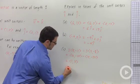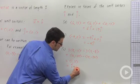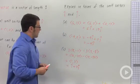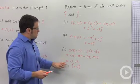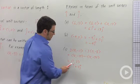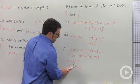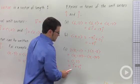And this becomes i, 1 times i is i, plus 2j. These are two different but very closely related forms for vectors. You can write them in component form or as linear combinations of the unit vectors i and j.